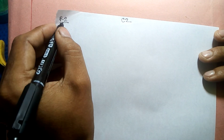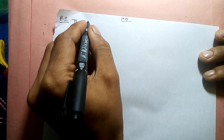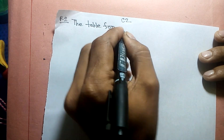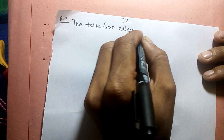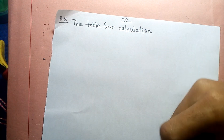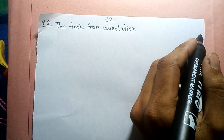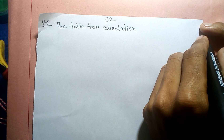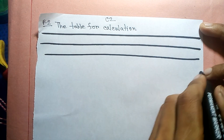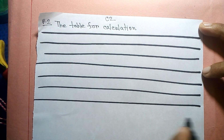We are setting up a table for calculation. The table will have rows numbered 1, 2, 3, 4, 5, 6, 7.